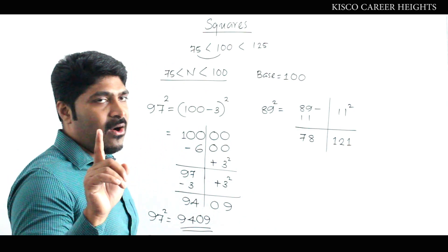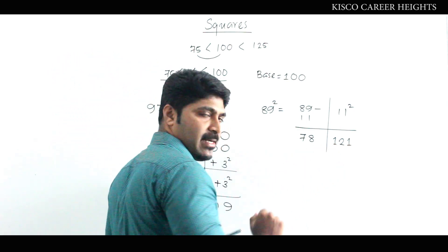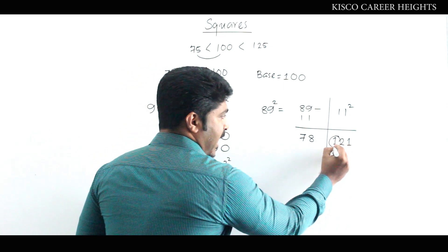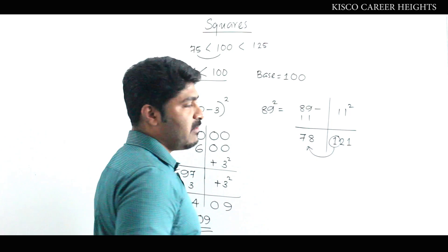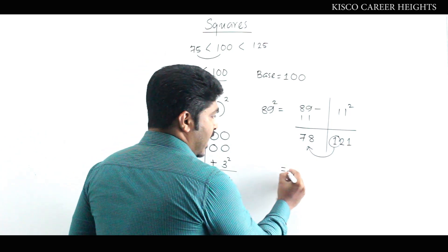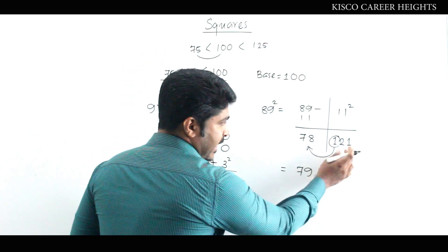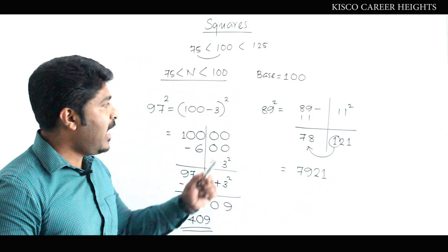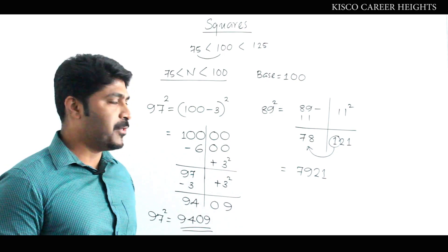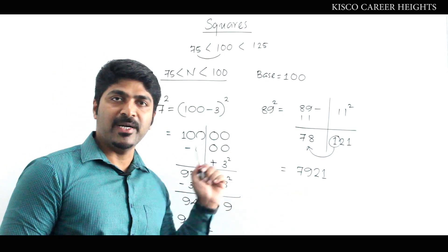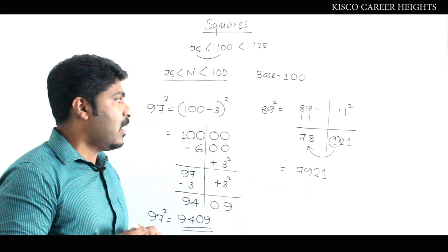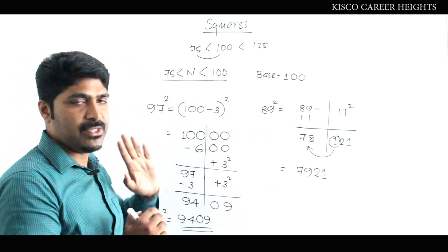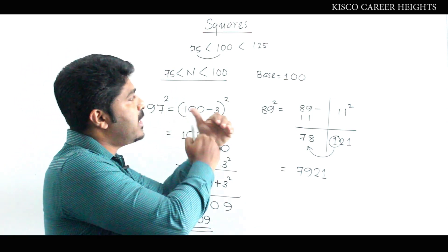We need only two digits on the right side, so take the 1 as a carry forward to the left side and add it to 78, giving 79. The remaining part is 21. So 89 squared equals 7921. This is the method to find all squares in this range.